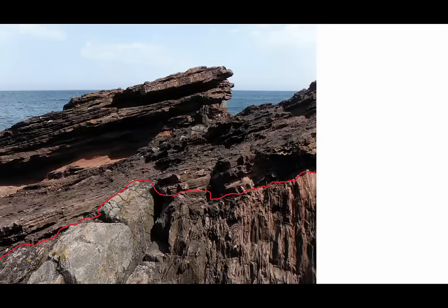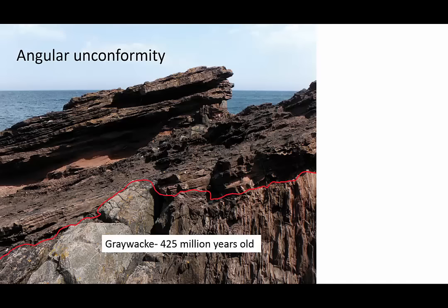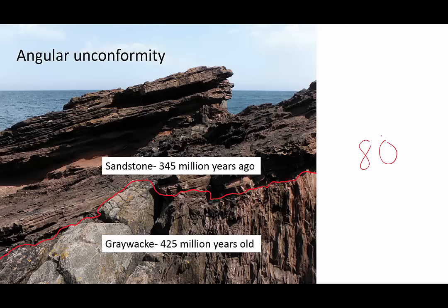So the red line represents the unconformity, which we now know separates graywacky, which was 425 million years old, and sandstone, which is 345 million years old. That's 80 million years of time between those layers. That is what we call deep time.